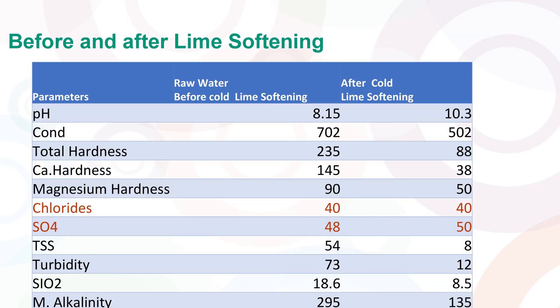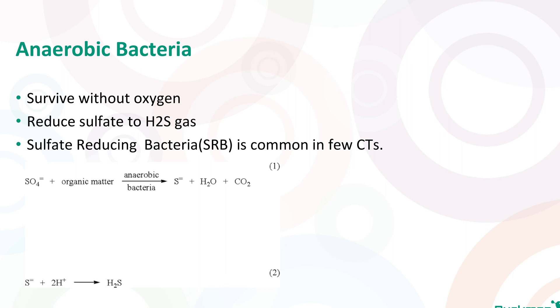Sulfate is a major component of cooling water systems. We add sulfate in cooling towers through sulfuric acid, and our makeup water also contains sulfate ions. In heat exchangers, if sulfate reducing bacteria is present, that bacteria will use the sulfate ion as a food source, converting sulfate ions into H₂S gas. That H₂S gas is very corrosive, and with the passage of time hydrogen sulfide will react with iron metallurgy and convert iron into iron sulfide.